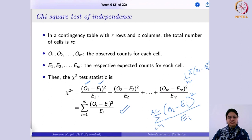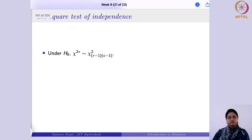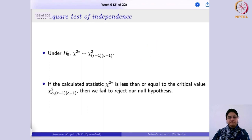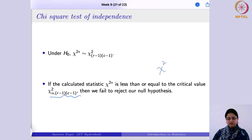This is the chi-square test statistic for the test of independence. Under the null hypothesis, it follows a chi-square distribution with (r−1)(c−1) degrees of freedom, where r is the number of rows and c the number of columns. If the calculated test statistic is less than the critical value, you fail to reject the null hypothesis; otherwise, if it exceeds the critical value chi-square alpha, you reject the null hypothesis.